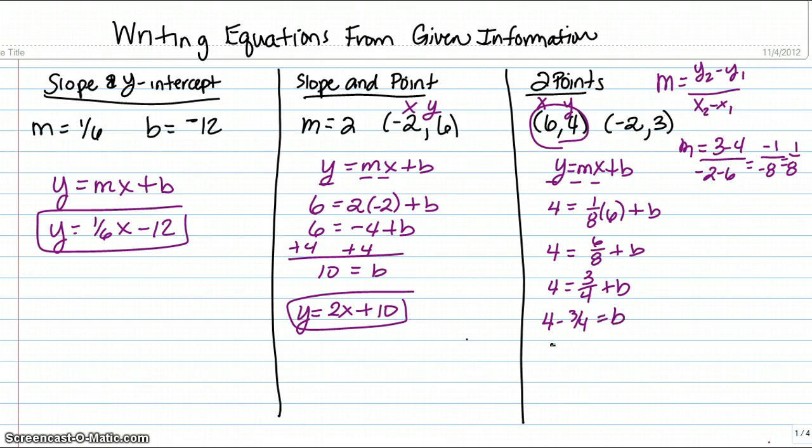Well 4 minus .75 is 3.25 for my b. So that means my final equation is y equals 1 eighth x plus 3.25. So that is the hardest situation we could give you, is where we have two points. There's no slope, no y intercepts, so you must find your own slope first. Then find your y intercept and then write the equation.